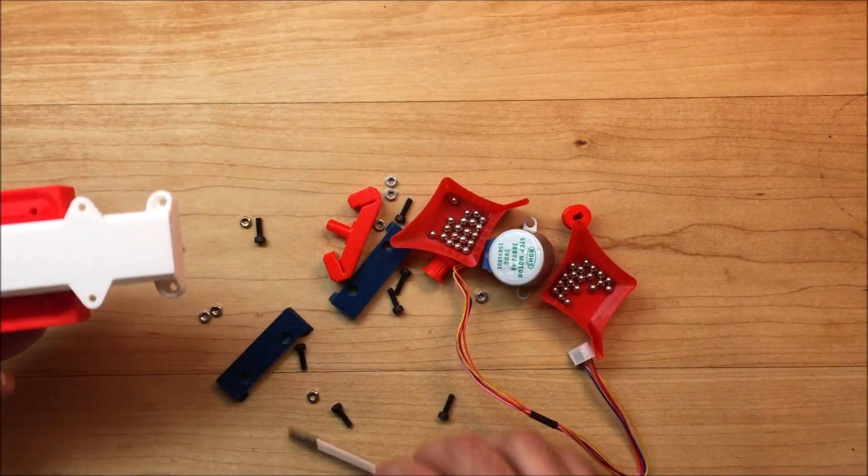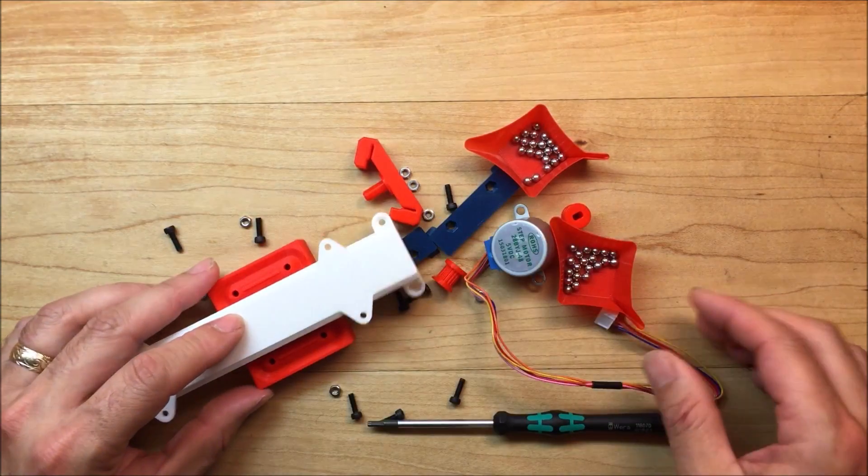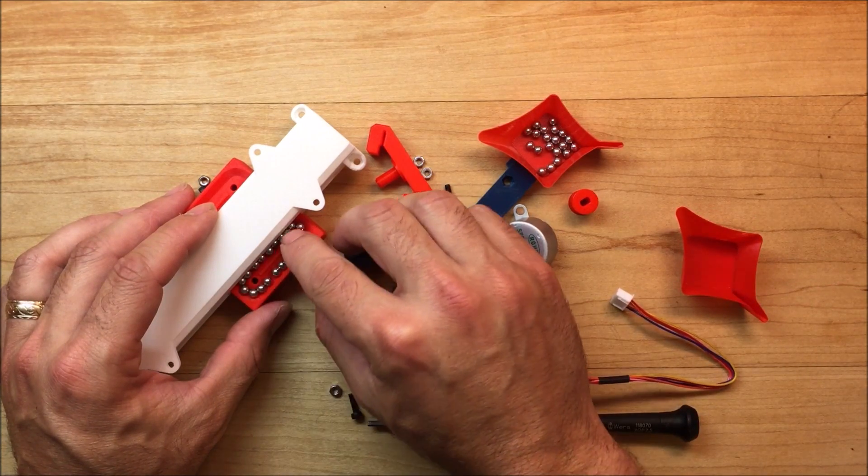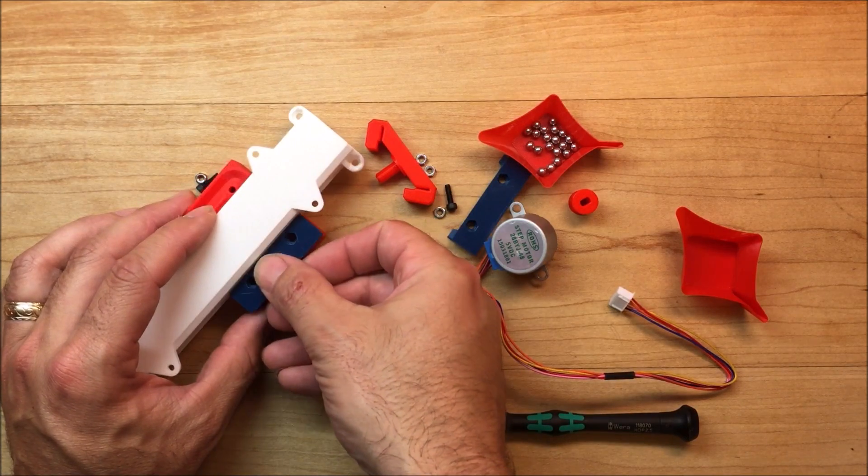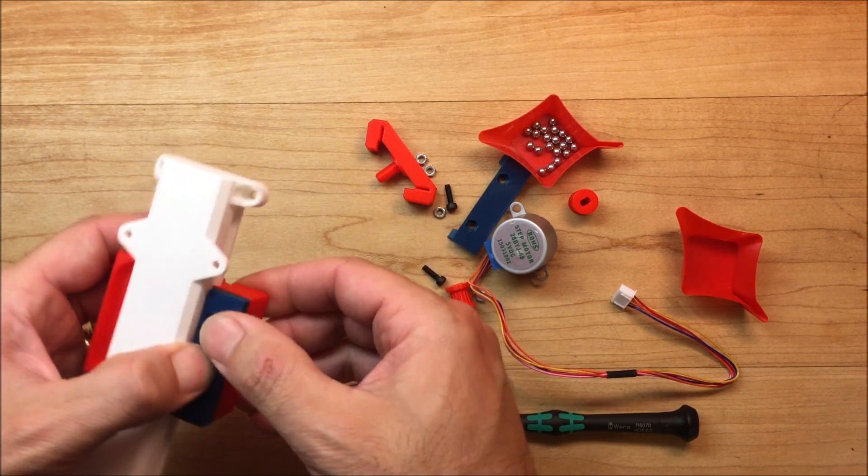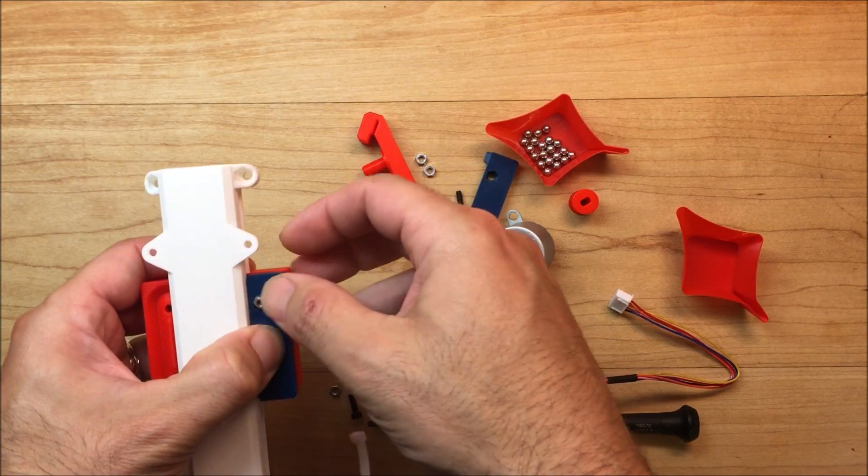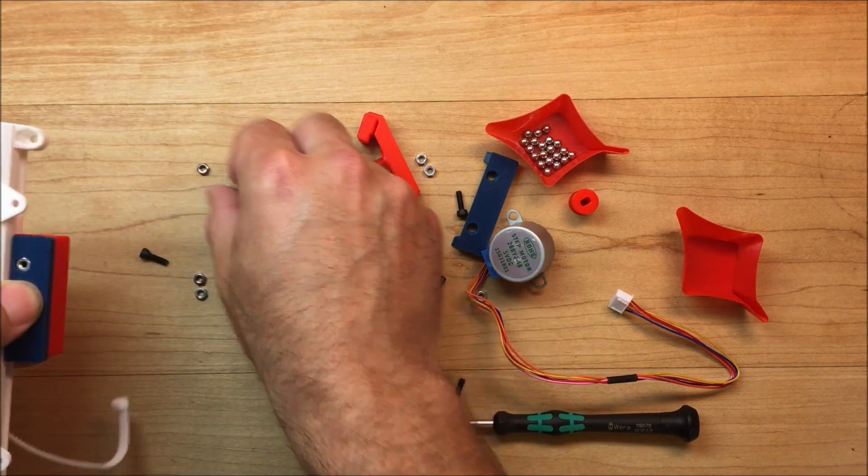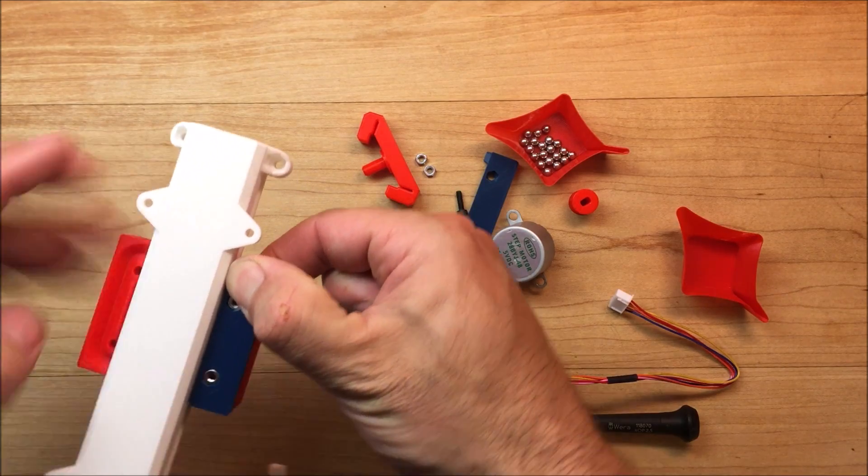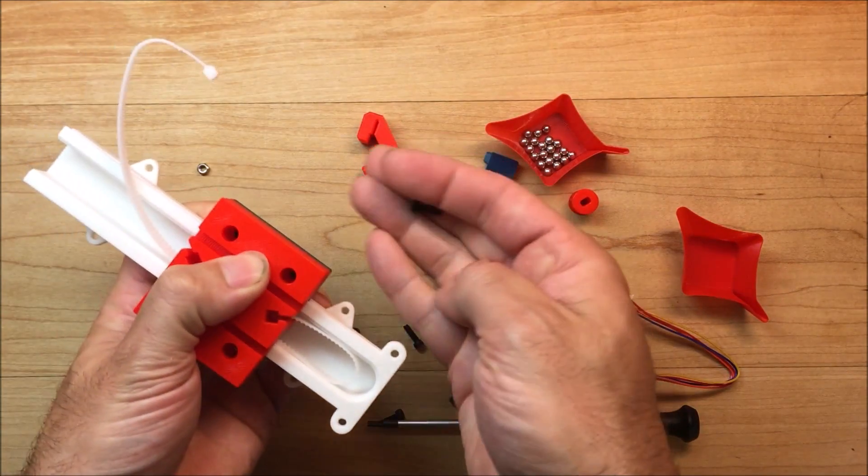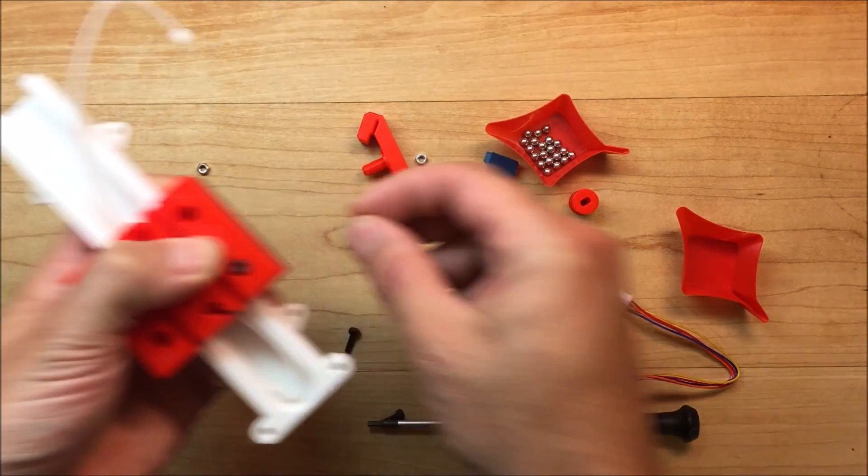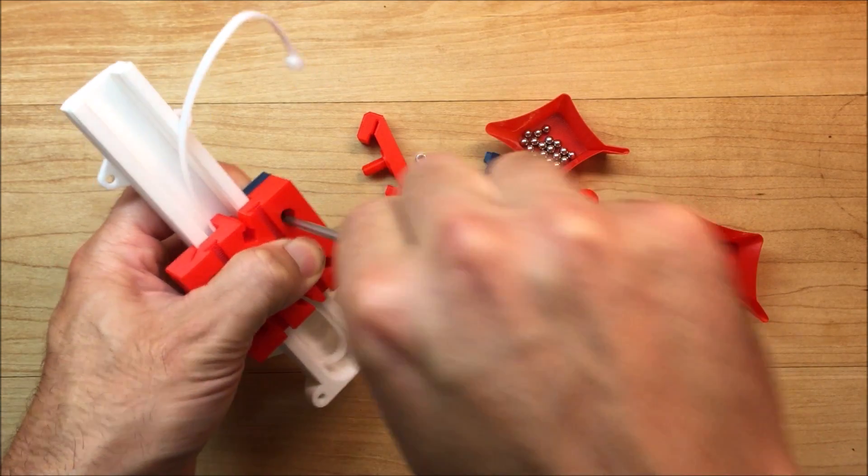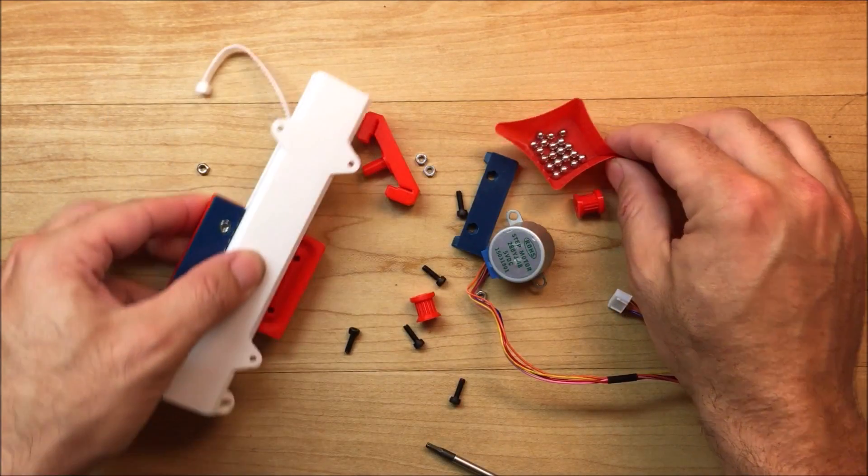Next we're gonna start inserting the bearings. You want 20 per side. So once you got 20 in there just put the cap on. And these are the M3 by 10 socket head cap screws. So you have one side done. Move on to the other side.